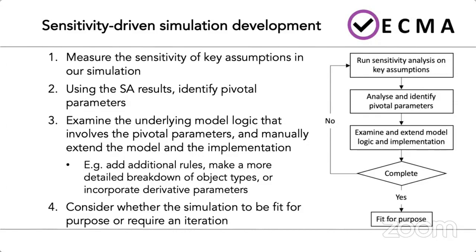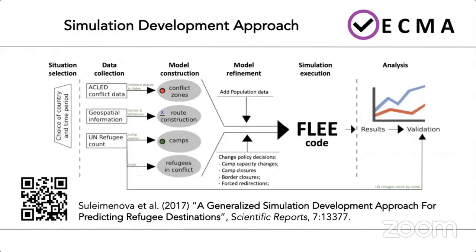Our approach can be used to further develop and refine existing simulations, which is the case for the simulation development approach for forced migration. It consists of six main steps: situation selection, data collection, model construction, model refinement, simulation execution, and analysis.